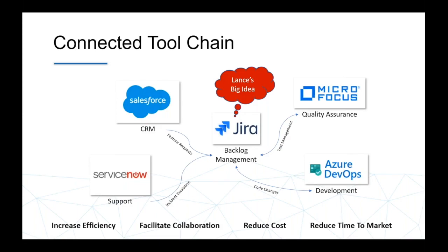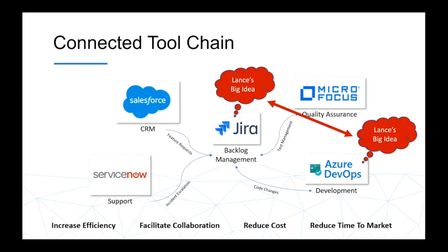Instead, Lance would have to call me and tell me what he wants done, or we'd have to have a meeting, or he could send an email, or worst case he'd have to log into Azure DevOps himself and repeat his work in a second environment. Either way, any of those methods result in redundant, duplicative work. So instead, what we'd rather do is have that big idea automatically show up in my world in Azure DevOps and have synchronized changes between them — so when I make a change or when Lance decides to reprioritize, we both know about each other's work immediately. That's really what ConnectALL is all about.